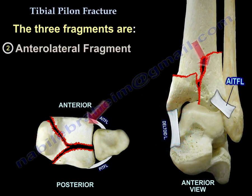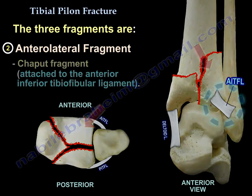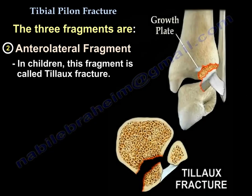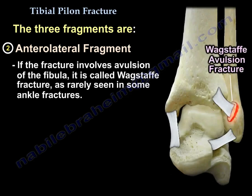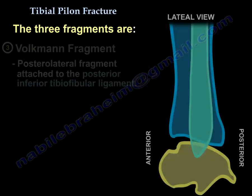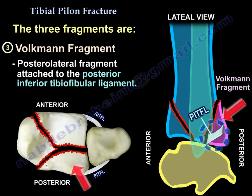The anterolateral fragment is called the Chaput fragment and is attached to the anterior inferior tibiofibular ligament. In children it is called the Tillaux fracture, and if the fracture involves avulsion of the fibula it is called the Wagstaffe fracture. The Volkmann fragment is the posterolateral fragment and is attached to the posterior inferior tibiofibular ligament.